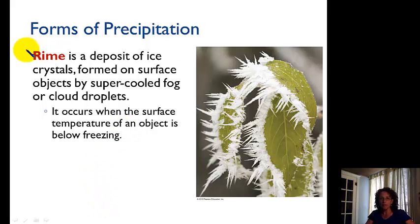One last form of precipitation is rime. This is beautiful, delicate ice crystals. And this is formed from super-cooled fog or cloud droplets. So it's really cold. It's like glaze, but a much smaller droplet. So they form these really beautiful, delicate ice crystals. So there we have our forms of precipitation. Let me know if you have any questions.